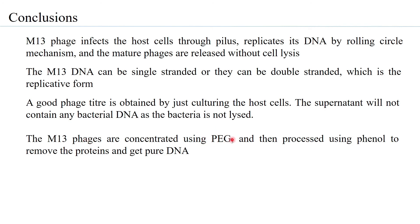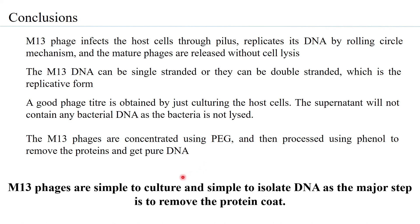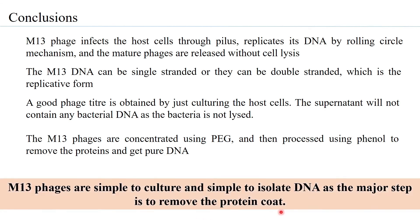The supernatant will not contain any bacterial DNA as the bacteria is not lysed, so the supernatant which will have only the phage will also give relatively pure M13 DNA. The M13 phages need to be concentrated using PEG because they are very small, and by simple centrifugation they do not centrifuge out. Using PEG they are concentrated, collected, and then processed using phenol to remove the proteins and get pure DNA. Thus, M13 phages are simple to culture and simple to isolate DNA, as the major step is only to remove the protein coat.